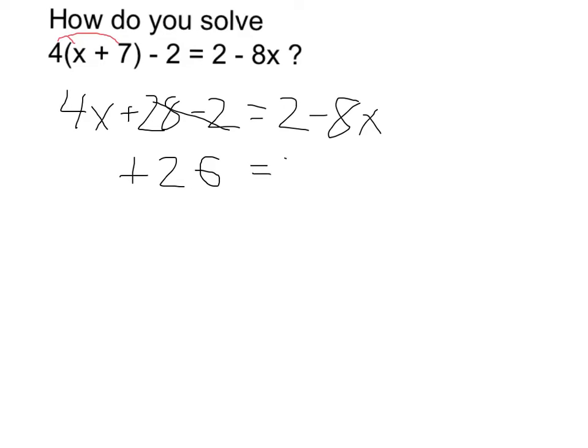So 4x plus 26 is equal to 2 minus 8x. Now, I need to get all my variables on one side of the equation. So what I can do is if I add 8x here, that's going to cancel out the 8x on the right side of my equation.